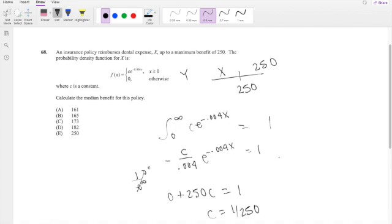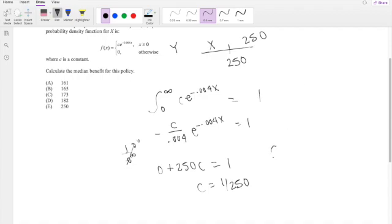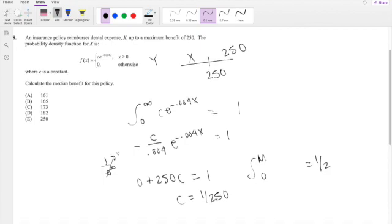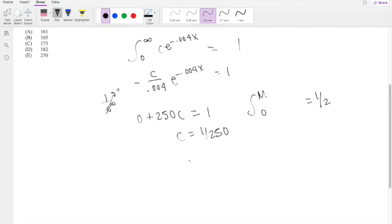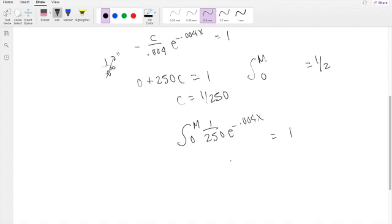Cool. And then we know that for median, some value from 0 has to equal 0.5, the halfway point of this policy. But we don't know if the median falls on this side or that side, so we can assume it falls on this side. We integrate from 0 to M. The function here becomes 1 over 250 times e to the negative 0.004X equals 0.5. This is exactly the CDF of an exponential function with mean equal to 250. We know this equals 1 minus e to the negative M over 250.